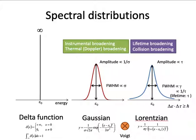XPS spectra are not delta functions — we observe Gaussian and Lorentzian shapes. Instrumental broadening and sample temperature effects contribute a Gaussian component, while lifetime broadening and collision broadening contribute a Lorentzian component. The realistic XPS spectrum is a convolution of Gaussian and Lorentzian. If you know the instrumental broadening and lifetime broadening contributions, you can de-convolute each component and analyze the peaks accurately.